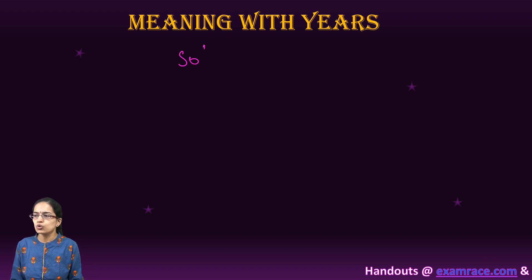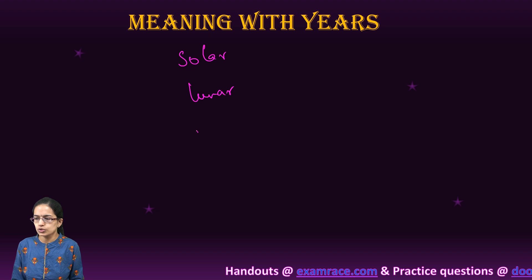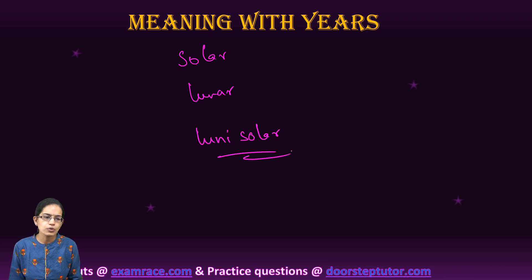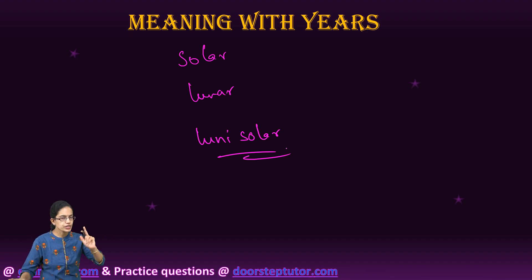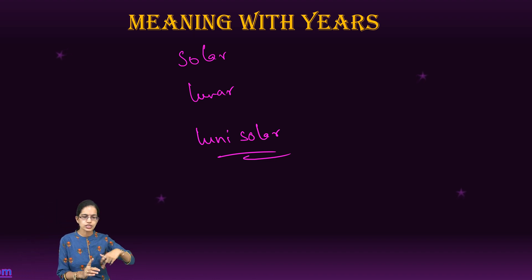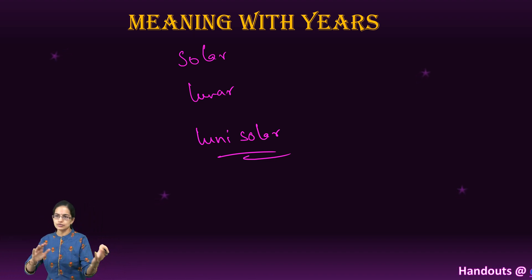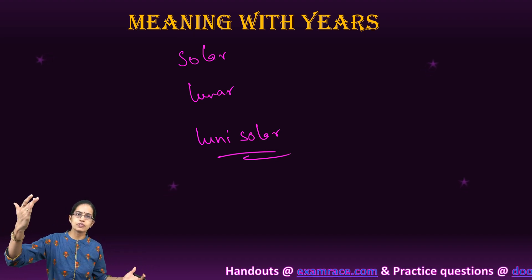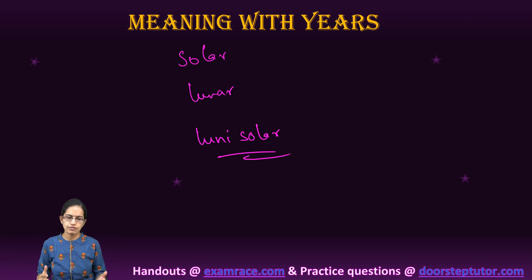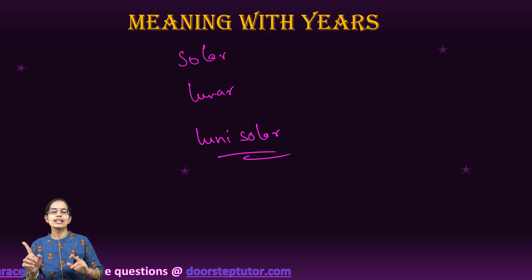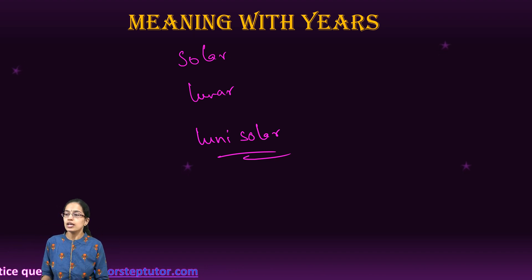A solar year is based on the Earth revolving around the sun. This revolution is understood in two halves: Uttarayan, the rising phase, and Dakshinayan, the declining phase. Interestingly, one solar year is equal to one day and one night for God according to traditional understanding.